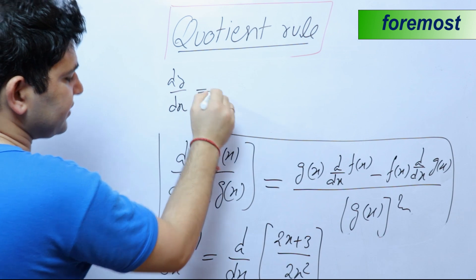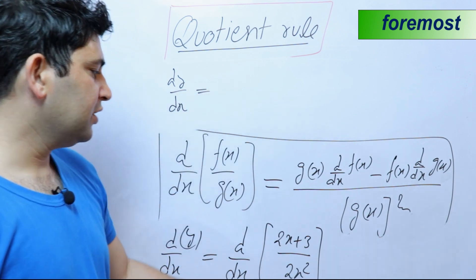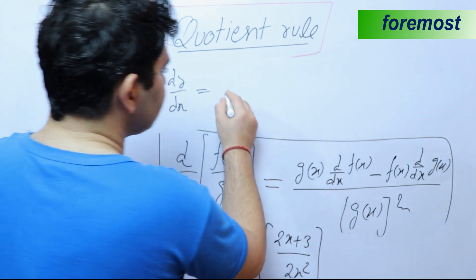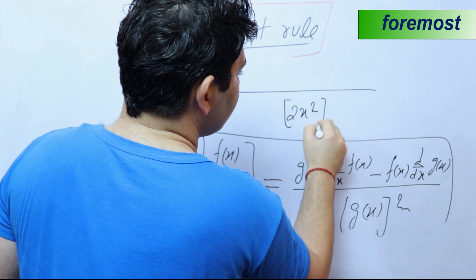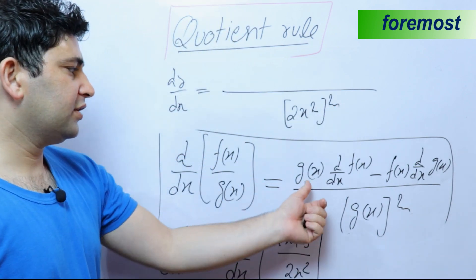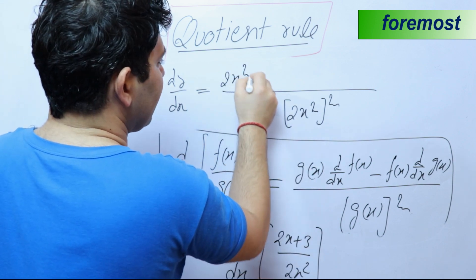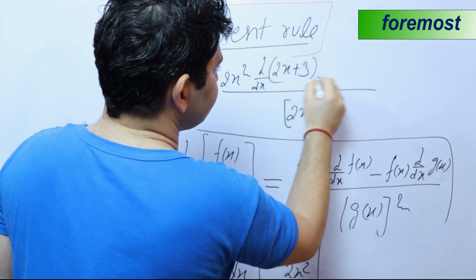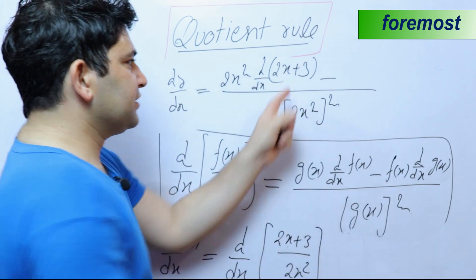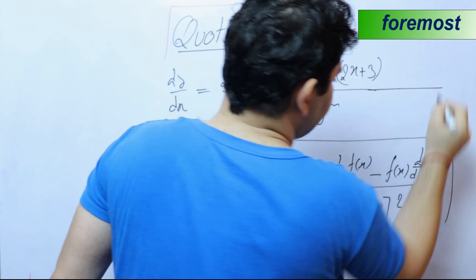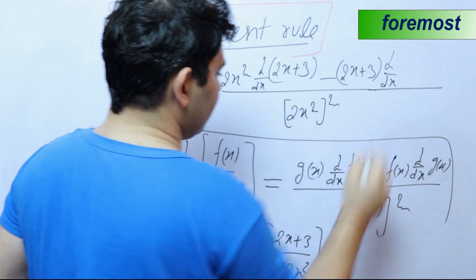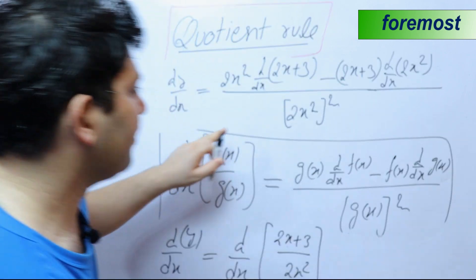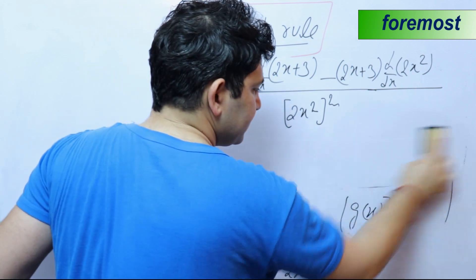We have dy upon dx, this is equal to: applying the quotient rule — in the denominator, g of x whole square, and g of x is 2x squared, so in the denominator there will be 2x squared, whole square. In the numerator: g of x as it is, that is 2x squared as it is, multiplied by the differentiation of f of x — which is 2x plus 3 — minus f of x as it is, that is 2x plus 3 as it is, and differentiation of g of x, that is d/dx of 2x squared. Now we have applied the quotient rule; let us solve this to get our answer.